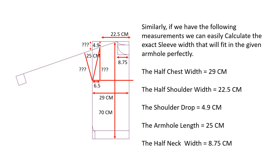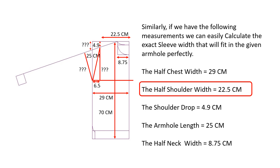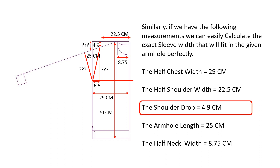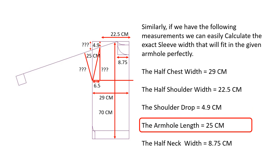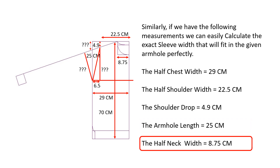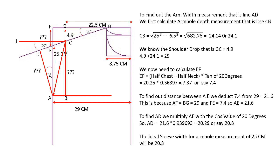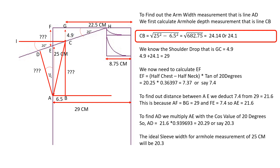Now let's reverse the calculation: if the armhole measurement is given and we have to find what sleeve width will fit perfectly. We know half chest width equals 29 cm, half shoulder width equals 22.25 cm, shoulder drop equals 4.9 cm, armhole equals 25 cm, and half neck width equals 8.75 cm. The difference between half chest and half shoulder is 6.5 cm. The armhole depth will equal the square root of (25 squared minus 6.5 squared), which equals 24.14 or 24.1 centimeters.